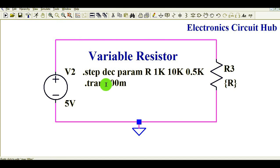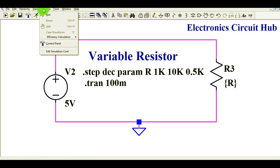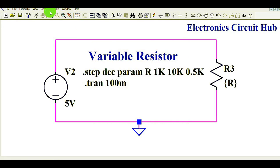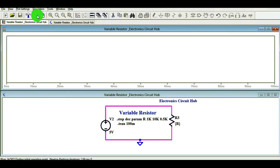You can see, dot tran, 100 millisecond. So you have to go simulate, edit, simulate, click on transient, and stop time is 100 millisecond. That is done. Now let me run the simulation, and show you the behavior.